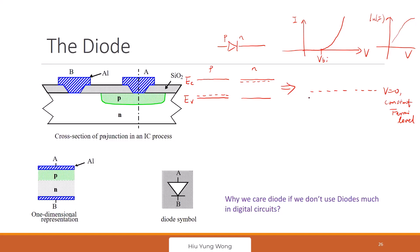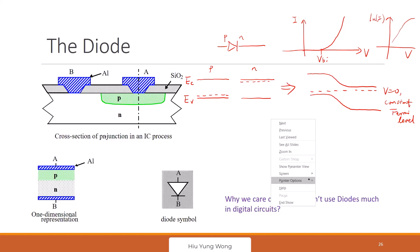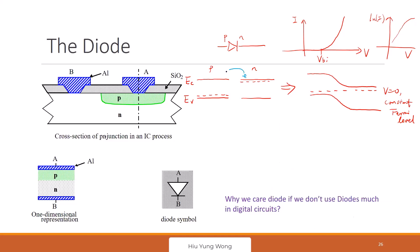Try to recall whatever you have learned before — the band structure becomes bent at the junction. The Fermi level is the so-called chemical potential; it represents how much electron you have. When you bring them together and they touch, electrons here will try to go to the other side, and holes here will try to go the other way.